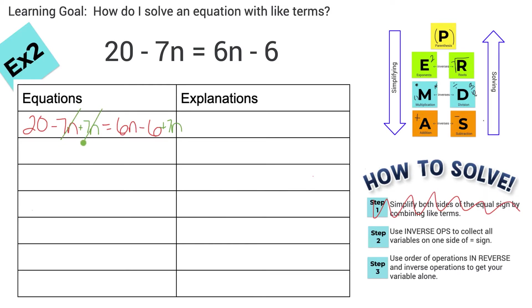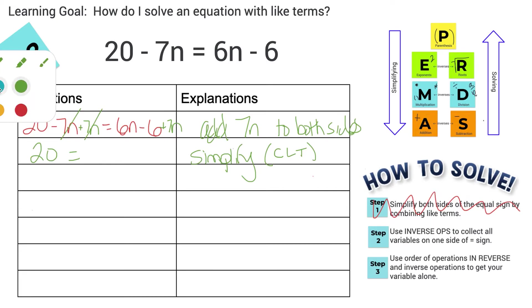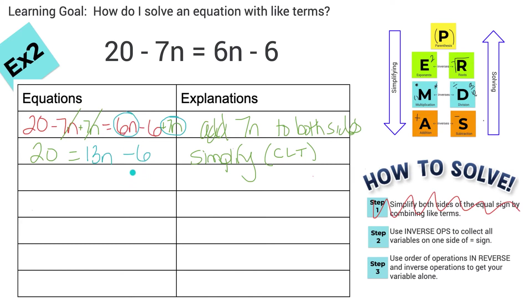Negative 7n and positive 7n cancel — those are inverse operations. Now I simplify by combining like terms. Those cancel, so 20 drops down, equal sign drops. Over here I have 6n plus 7n: 6n's plus 7n's is 13n's. And this minus 6 drops down. So adding 7n to both sides got all the variables on the same side and I was able to combine the like terms so now I only have an n in one spot.